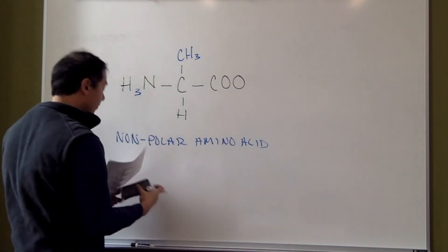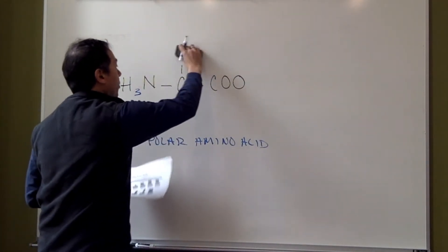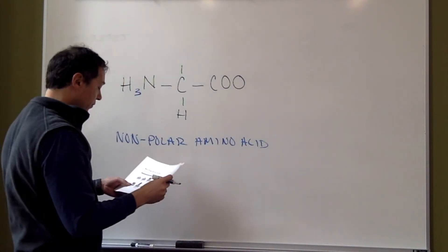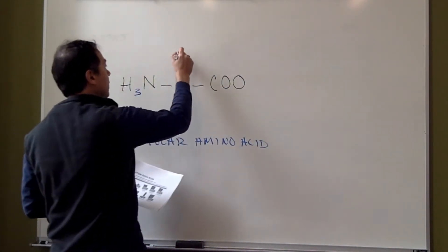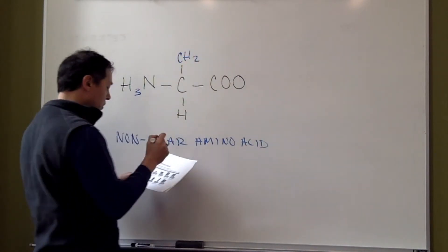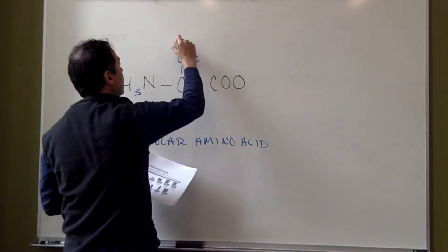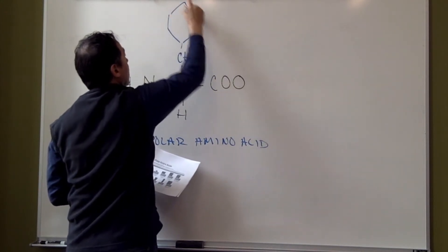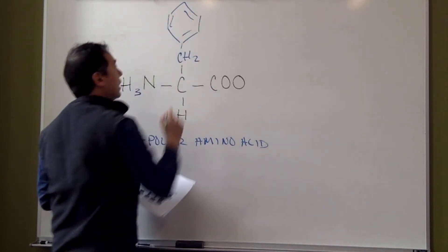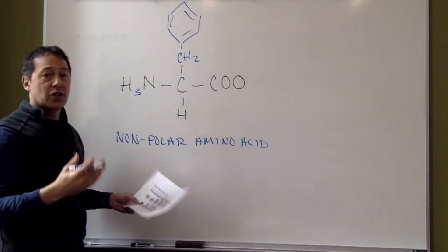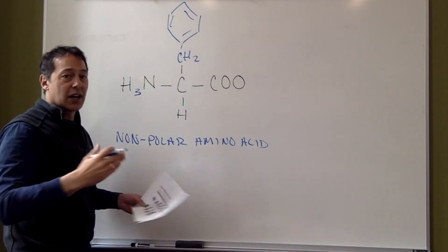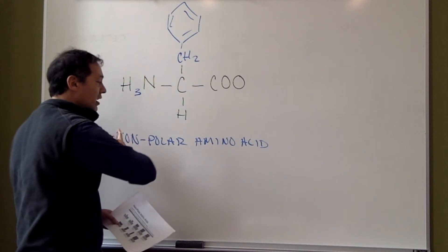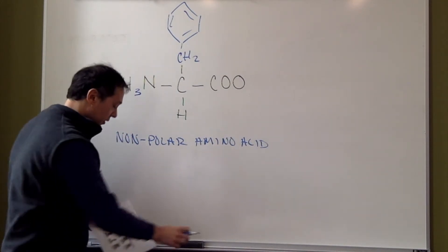Some other examples of this might be adding more carbons. So if we had something like a CH2 and then a benzene ring attached on here — these are all just carbon atoms, and carbon is not strongly electronegative. So we would consider these as nonpolar amino acids.